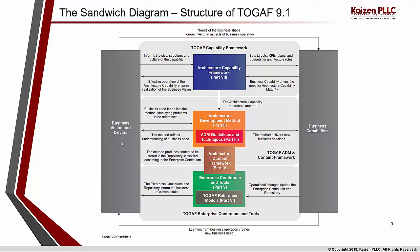Every organization, whether small, medium, or large scale, is made up of its business visions and drivers. A business vision statement is the desired end state — a one-sentence, inspirational, long-term desired change the organization wants to achieve. A driver is an external or internal condition that motivates the organization to define its goals. An example of an external driver is a change in regulation or compliance rules.